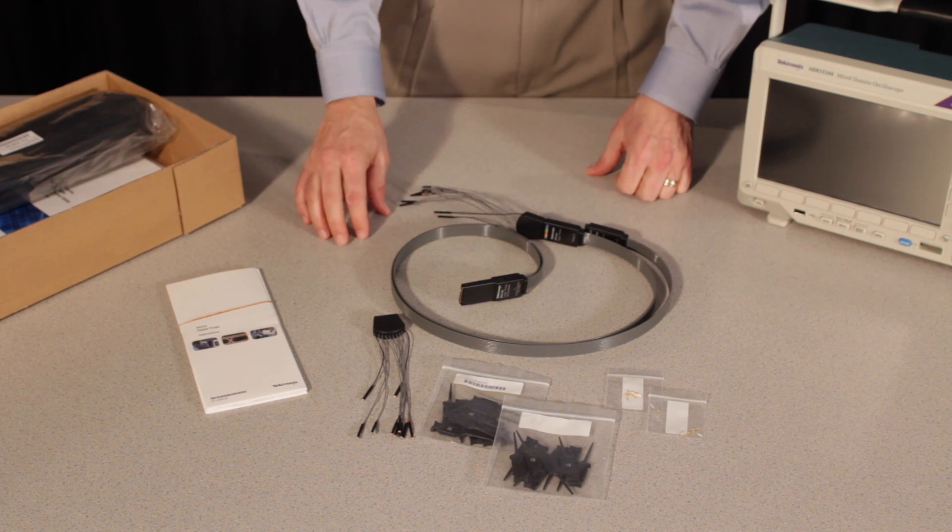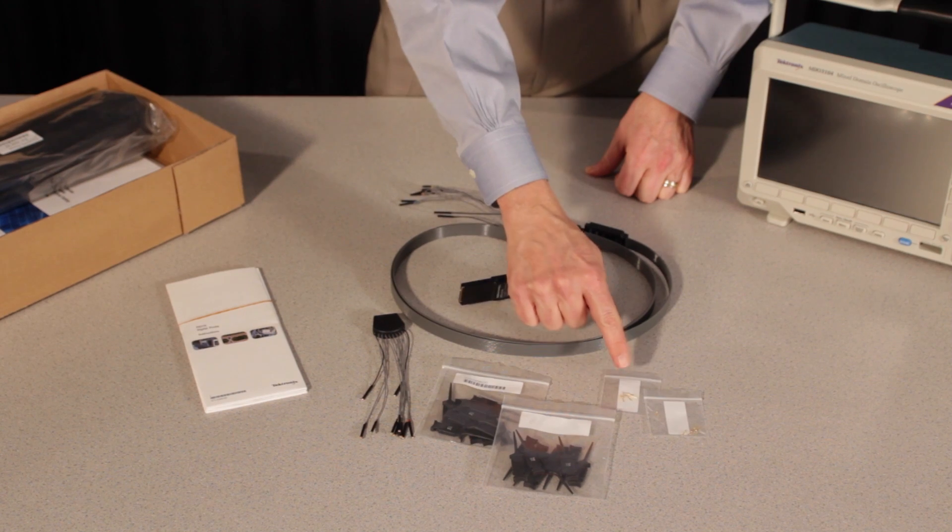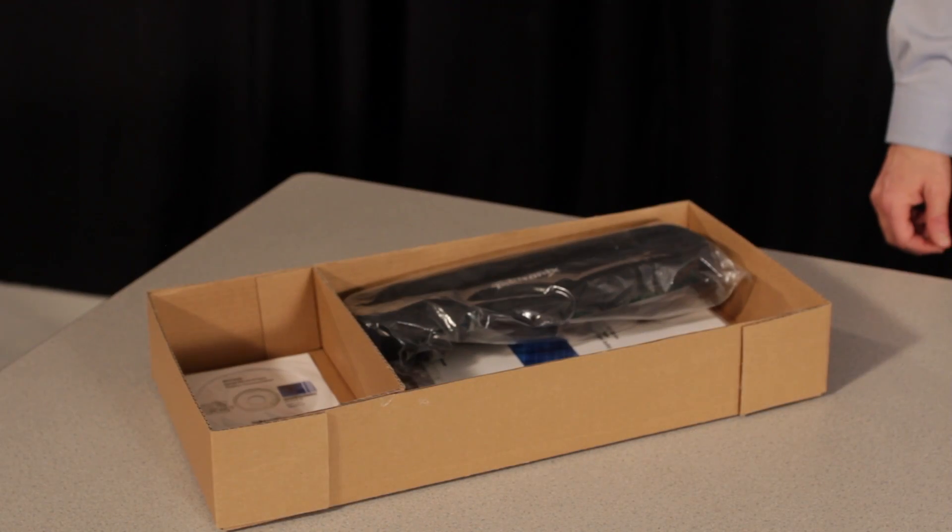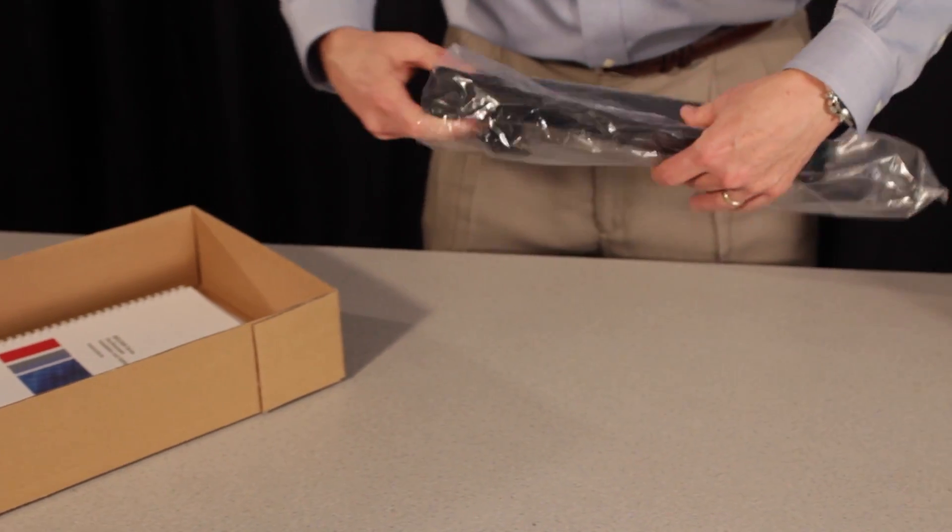Other accessories in the accessory bag include probe tip extenders and IC grabbers. The MDO also has a pouch to keep all the probes and accessories in one place so they don't get lost.